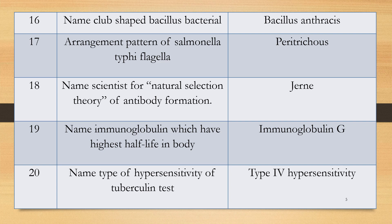Question 18: Name the scientist who proposed the natural selection theory of antibody formation. This is a frequently asked question. Answer: The famous scientist is Jerne.